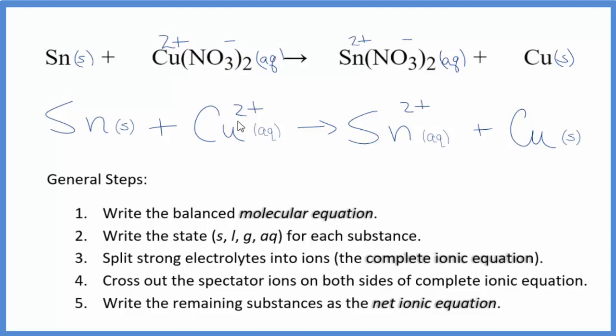If we look, we have a 2 plus over here on this side and a 2 plus over here. So charge is balanced. And if you count the atoms up, they're balanced as well. So that's it. This is the balanced net ionic equation for Sn plus Cu(NO3)2. And this is Dr. B. Thanks for watching.